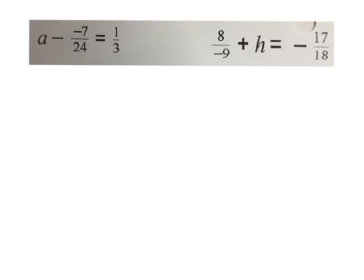Okay, let's go ahead and go through these problems. I'm going to keep this first one organized — put my line down. I can see it's really a minus a negative, so since it's subtracting a negative, I'm going to keep, change, change. That means keep my a, change my subtraction to addition, change my negative to a positive. So really what this is saying is to add positive 7 twenty-fourths.